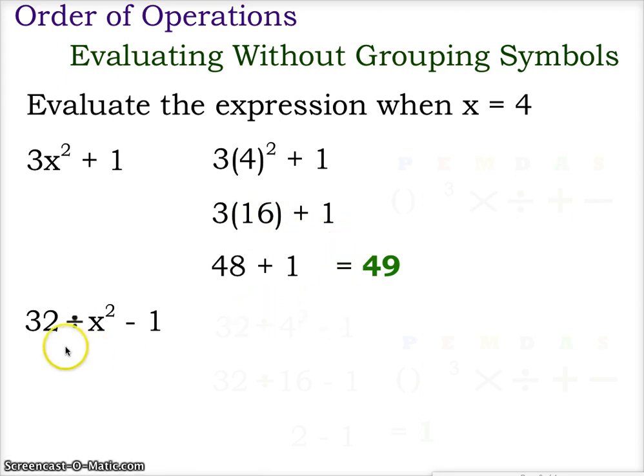The second example, we have 32 divided by x squared minus 1. So we begin again by replacing the x with the 4. This gives us 32 divided by 4 squared minus 1. Now before we can do multiplication and division, we first have to solve for the exponent, and so therefore 4 squared equals 16.